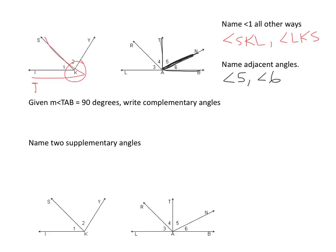Next one, mark up your diagram. If the measure of angle T-A-B, so this guy right here, is 90 degrees. Put that 90 symbol in. Write the complementary angles. So this means that angle 5 and angle 6 are complementary. They add up to 90. These two are also complementary because I can put a 90 on the other side. So angle 3 and angle 4 are complementary as well.